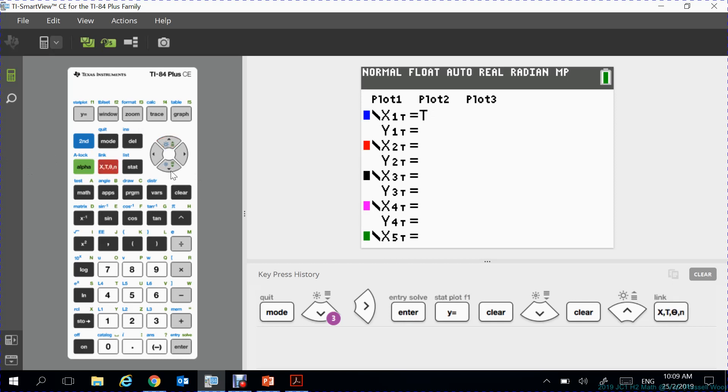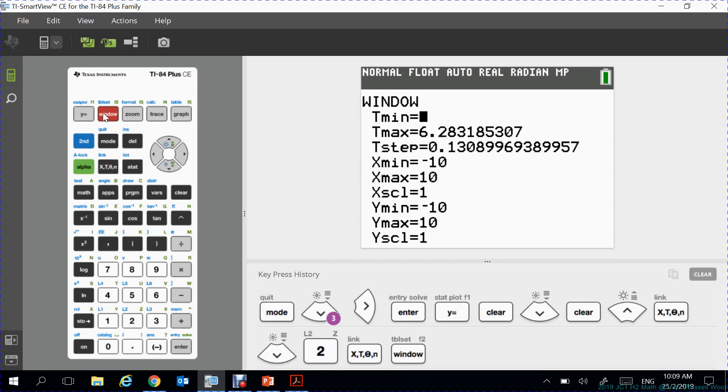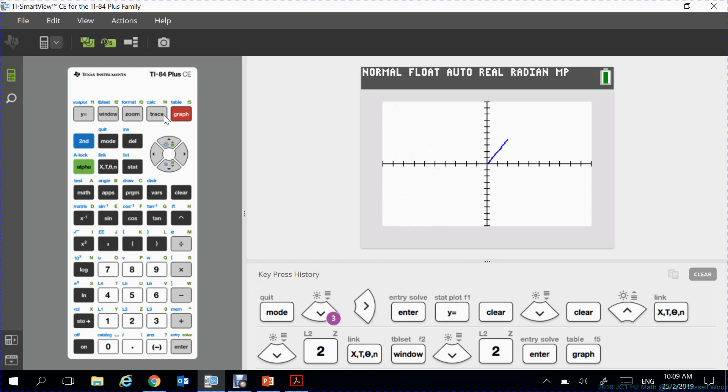And then 2t. By default if you go to window, what the GC does is enter a t minimum of 0, t maximum of 2π. This is the default setting. You have to change it because what do you want? You want t to be between 0 to 2 only, so you must change this to 2. Then you go to graph. You can see this short line. You can see very good.